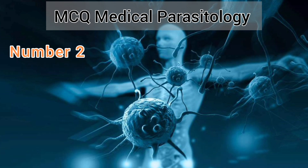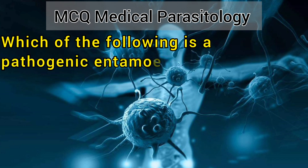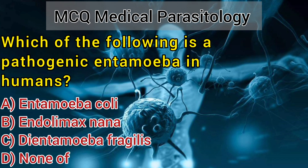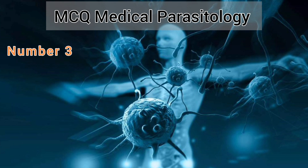Number 2. Which of the following is a pathogenic entamoeba in humans? A. Entamoeba coli. B. Endolimax nana. C. Dientamoeba fragilis. D. None of the above. Answer: None of the above.